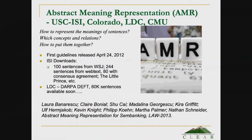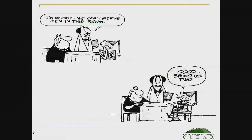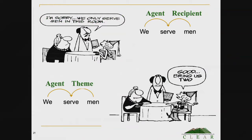So what are abstract meaning representations? I'll give a quick recap. One of the things we want to keep track of are semantic role relations — like the agent-theme-patient stuff. To illustrate why we care: here we have a waiter speaking to two ladies, saying 'I'm sorry, we only serve men in this room.' One of them responds with 'Good, bring us two.' Why is that funny? Because of a logical incongruity. The waiter intends 'men' to be labeled as the recipient — people who will be served — whereas the lady is interpreting 'men' as the theme: they are what is going to be served. So getting these semantic role labels right is useful.